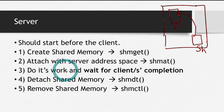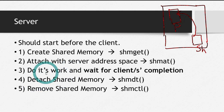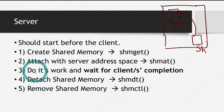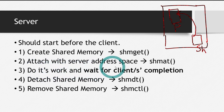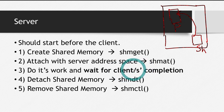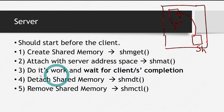The third step is do our work — that is, whatever we want to do in the server: write something in the shared memory, read something, or whatever. We have to do our work and then we have to wait for the client's completion. So the third step is further subdivided into two steps: step one, do whatever we want; and step two, after completing our work, we have to wait for the client to complete and wait for the client's signal. The client will signal us that it has done its work, and then we will move forward.